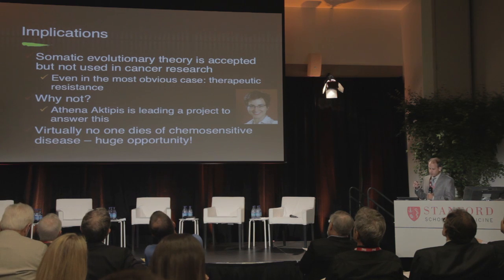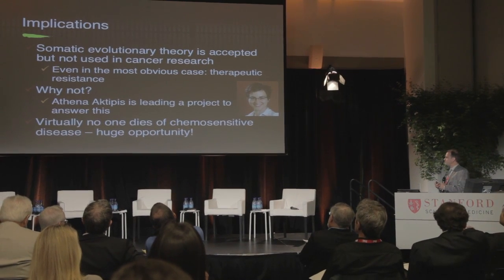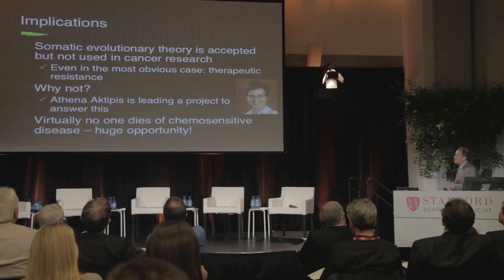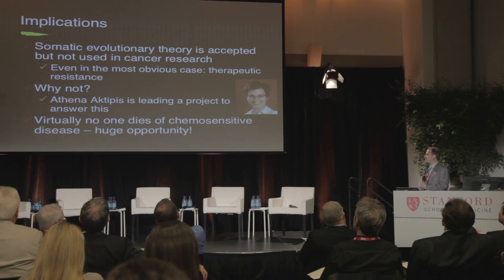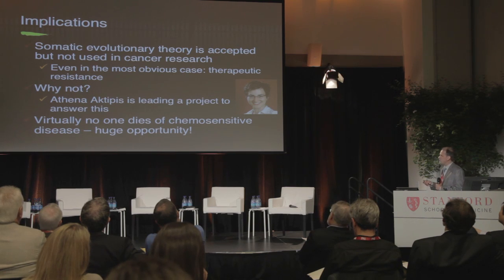It's striking that evolutionary theory is actually the dominant theory in cancer — it is accepted and taught in medical school, though somewhat superficially. I don't get pushback at national conferences. It's survived 36 years of testing. But even in the most obvious case, it's actually not being used. The other critical point is that virtually nobody dies of chemo-sensitive disease. We don't have a big problem finding drugs that kill cancer cells — what we have a big problem with is finding drugs that actually extend life, because they select for resistance and then the patient dies from that resistant disease. This is a huge opportunity to understand resistance, prevent it, and treat it.